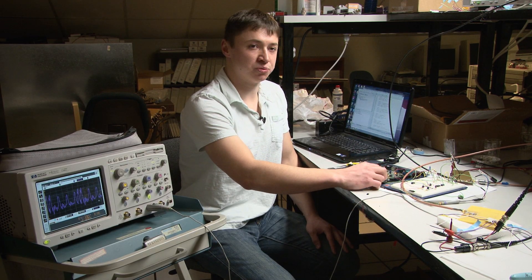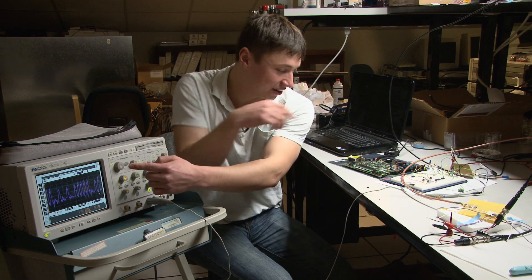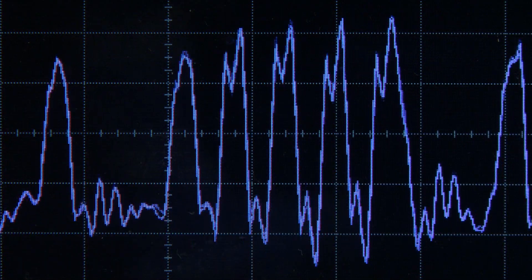By turning the different switches, we can tell the device to either go forward, turn left, or turn right. And we can see the data is changing on the device here, on the oscilloscope, by changing these switches.